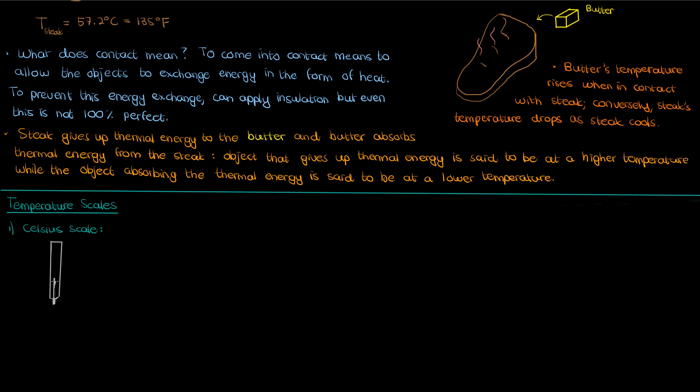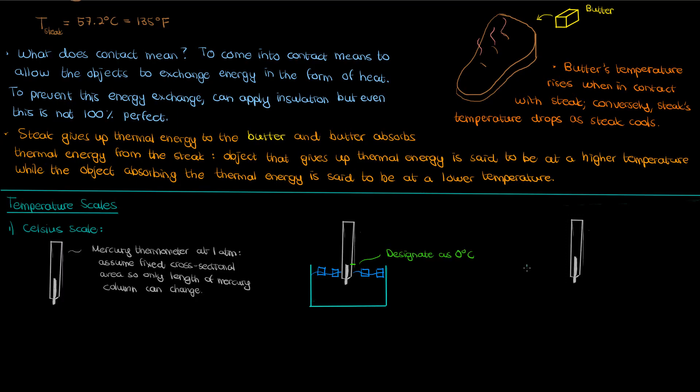The way you arrive at that is you take a thermometer at one atmospheric pressure, like a mercury thermometer which is based on the expansion of mercury in a column with a fixed cross-sectional area, and you put that thermometer in water at its freezing point. You mark the length of the column of mercury at this freezing point temperature and designate it as 0 degrees Celsius. Then you put that same thermometer in water at its boiling point. You then mark the length of the mercury column at this temperature and call that 100 degrees Celsius. Then you divide the 0 and 100 marks by 100 equally spaced increments with each increment representing 1 degree on the Celsius scale.